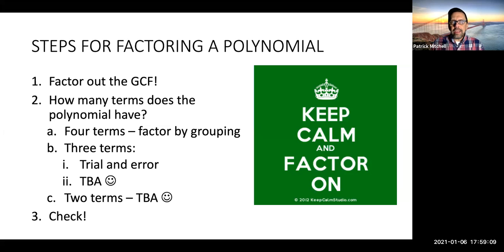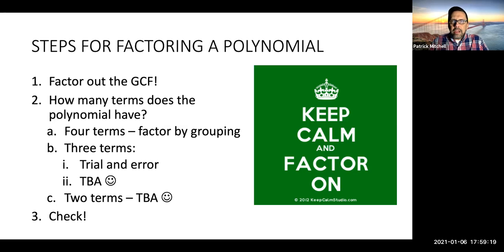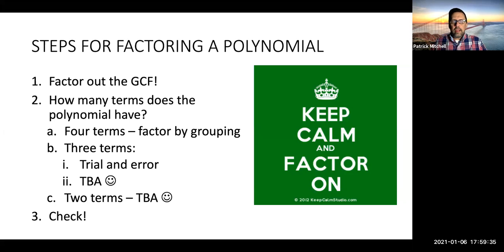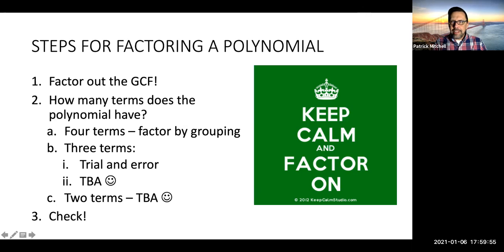Don't forget, you can always check your answer. The only reasonable answers in a factoring problem are the correct answer or a big question mark — you don't ever have to leave a wrong answer, because if you check it, you can tell it's wrong. I don't recommend leaving things blank; show me everything you tried. If you try a bunch of things and don't find something that works, that could mean the polynomial is prime. That's going to do it for Section 6.3. We'll see you next time.